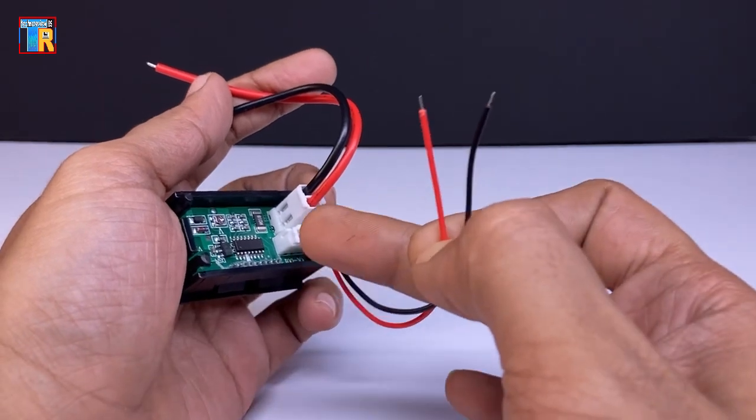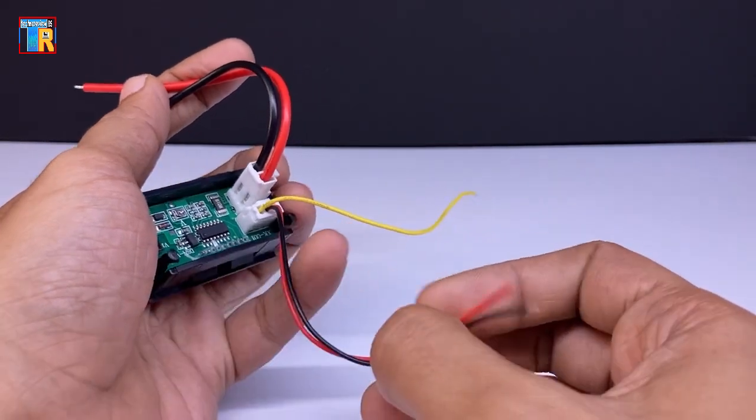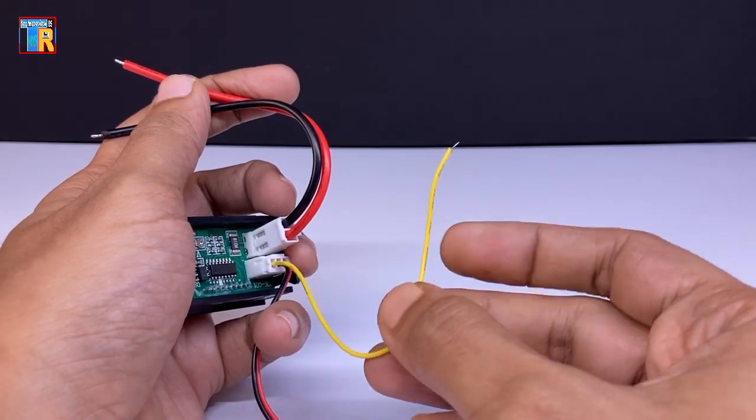You can supply it with 5V to 12V DC. The yellow wire is for input voltage measurement.